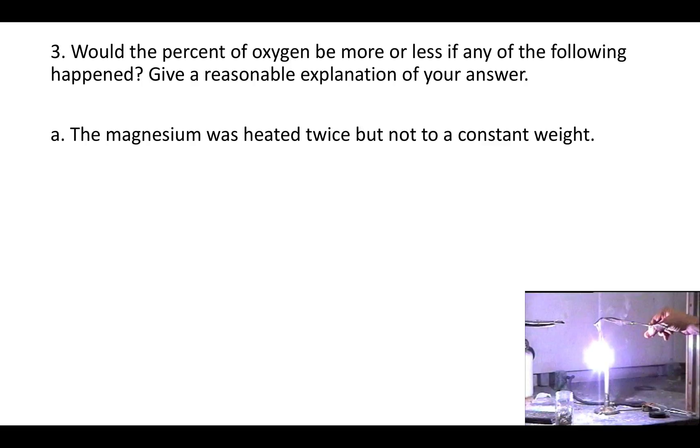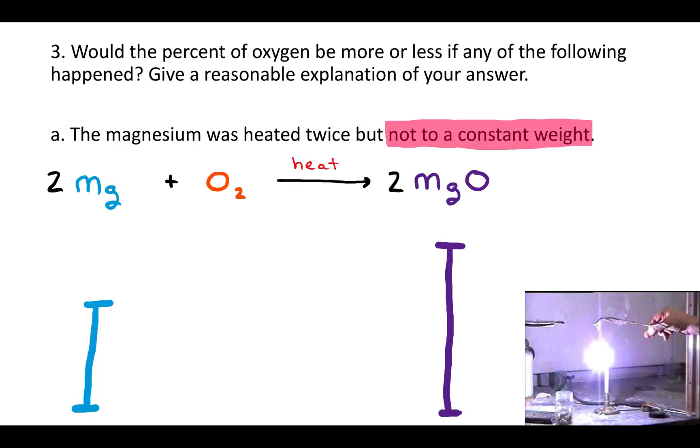So when they say that you didn't heat it up to a constant weight, what they're really saying is that some of the magnesium didn't react. There's still magnesium available for oxygen to stick to. And if you heated it up again, the weight would go up. So if we have our scenario where we take magnesium and we heat it up with oxygen and get magnesium oxide, if you didn't heat it to a constant weight, then there is still magnesium there that's unreacted.